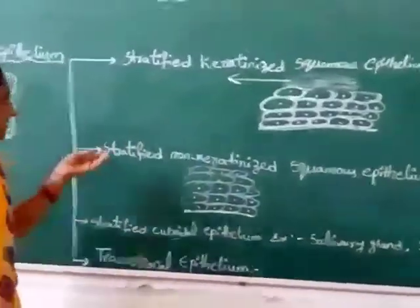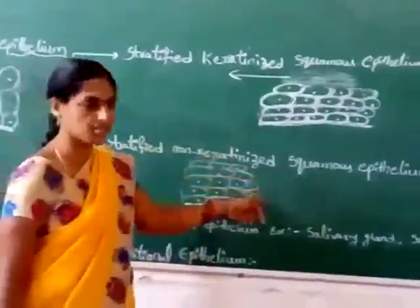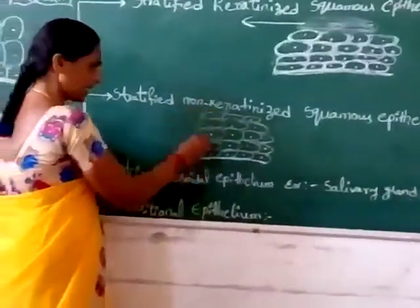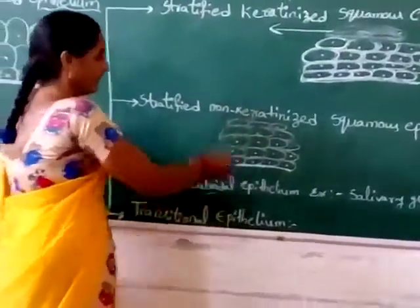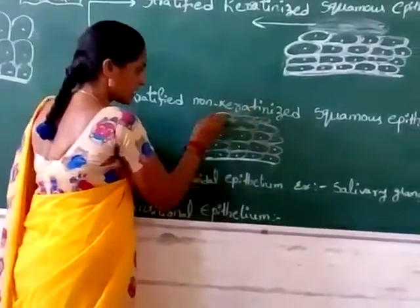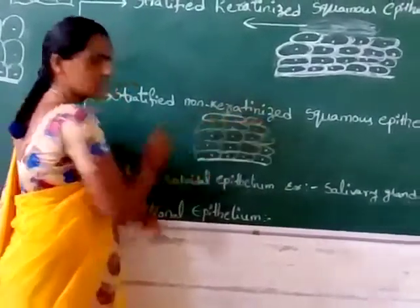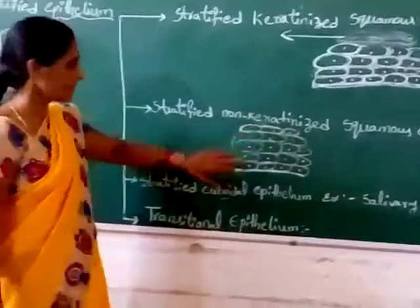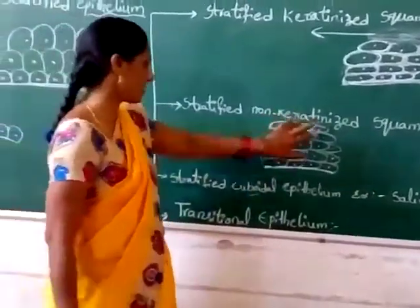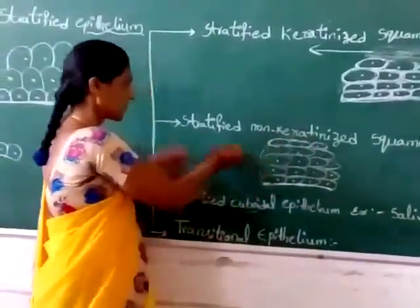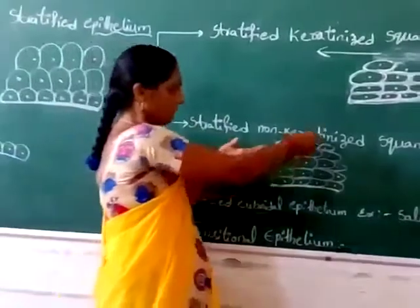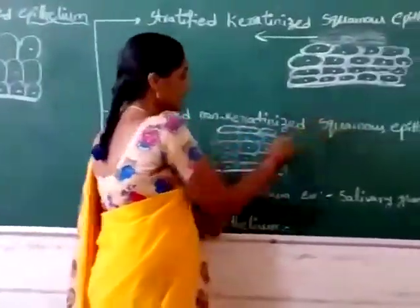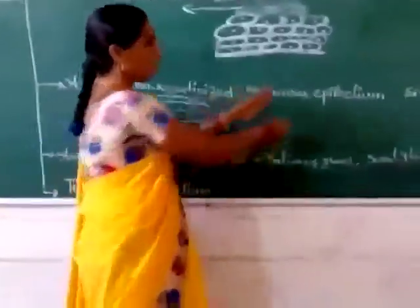Second is stratified non-keratinized squamous epithelium. It is also multilayers and cells are flat-like structures, but keratin is absent. That is why it is non-keratinized and cells are flat-like structures, so squamous epithelium.